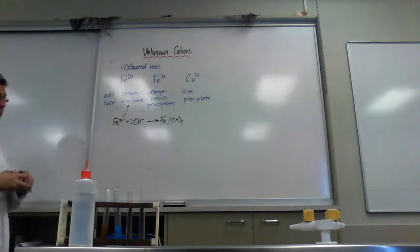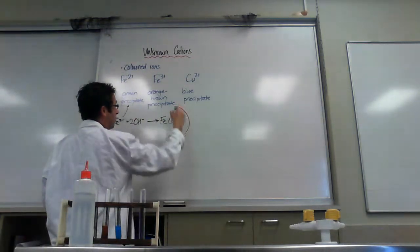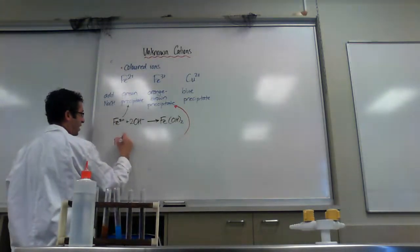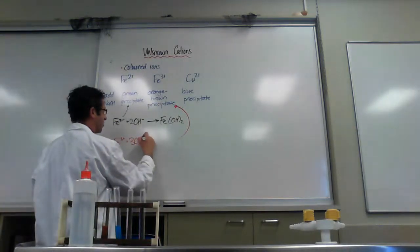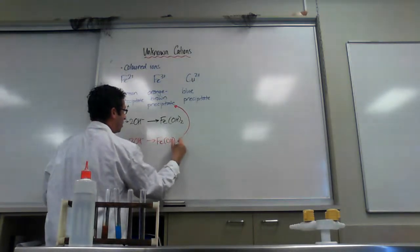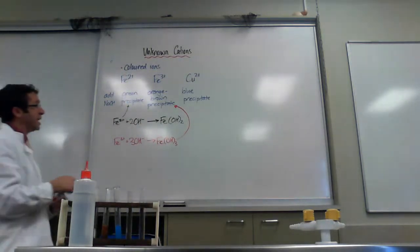For the orange brown precipitate, this is Fe3+ plus 3OH- goes to Fe(OH)3.